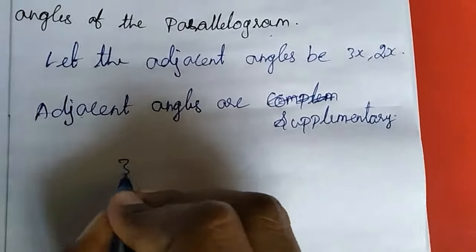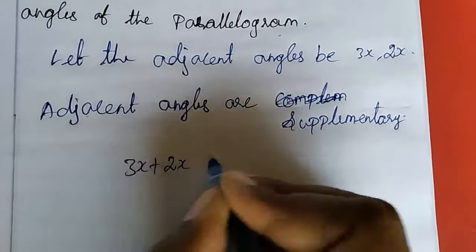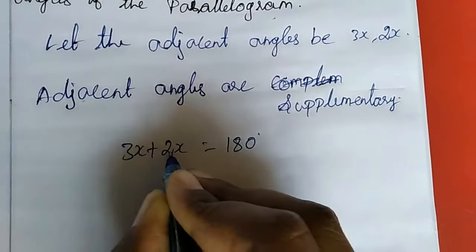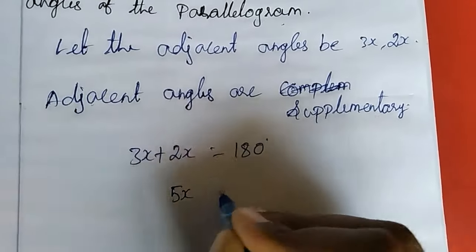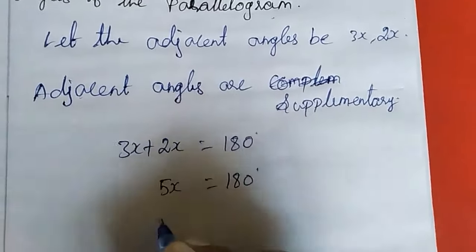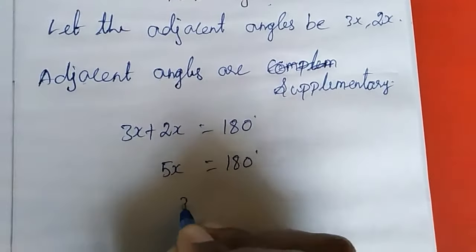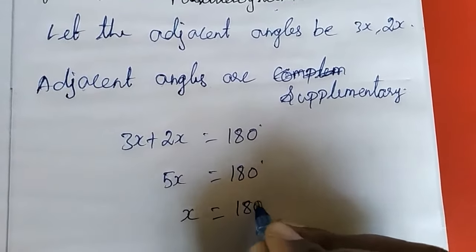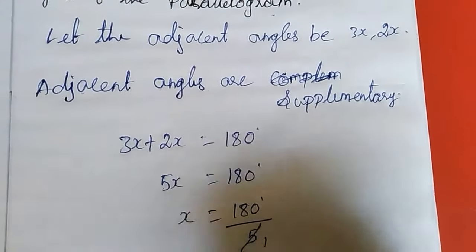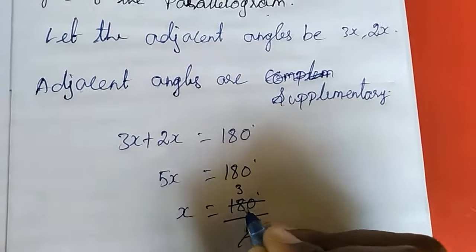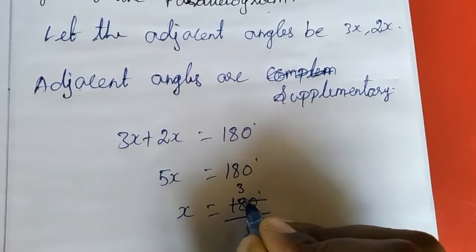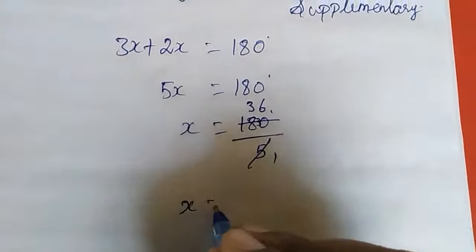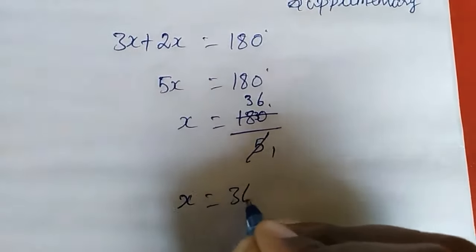Therefore, 3x plus 2x is equal to 180 degrees. If you add 3x and 2x you get 5x. So 5x equals 180 degrees. We need x alone, so 5 will come to divide. x equals 36 degrees.